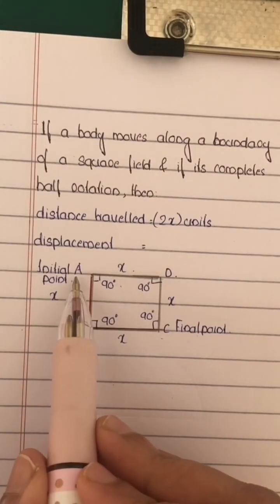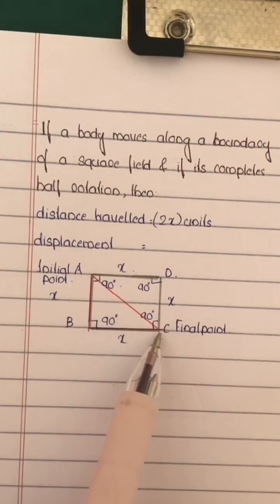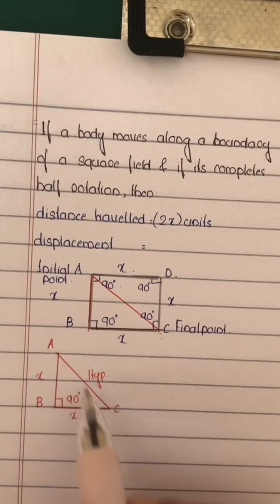This displacement is length of AC. So length of AC can be found out by applying Pythagorean theorem to right angle triangle ABC. Hypotenuse square is equal to base square plus altitude square.